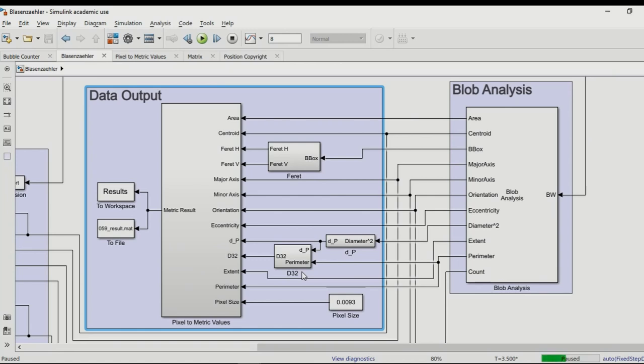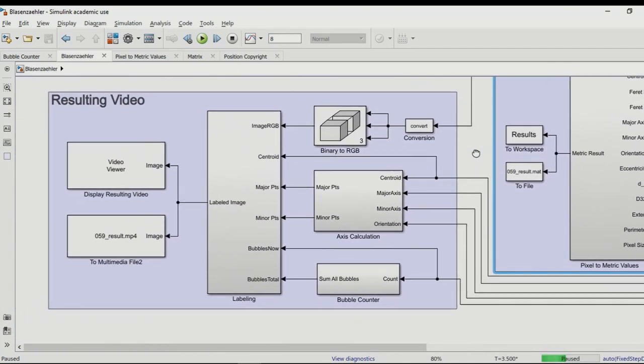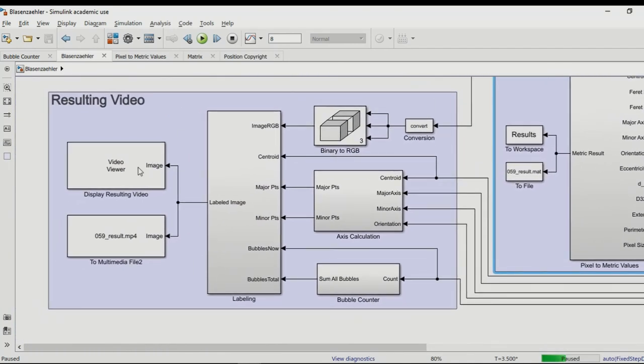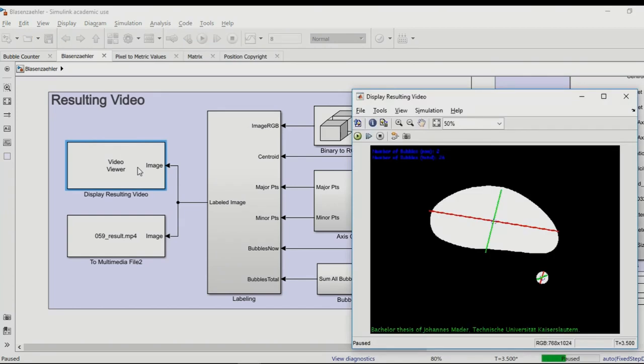All the sizes are converted from pixel sizes into metric sizes and then saved to the MATLAB workspace and as a MATLAB file. And to get a response when a bubble is detected, its major and its minor axes are marked in the image.